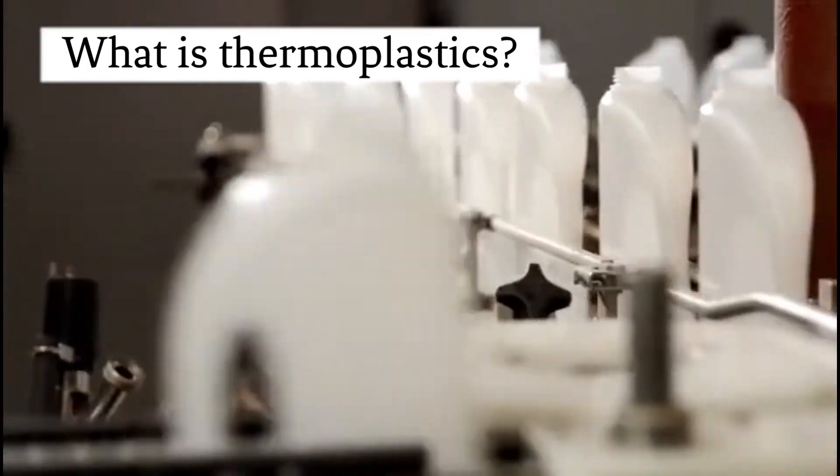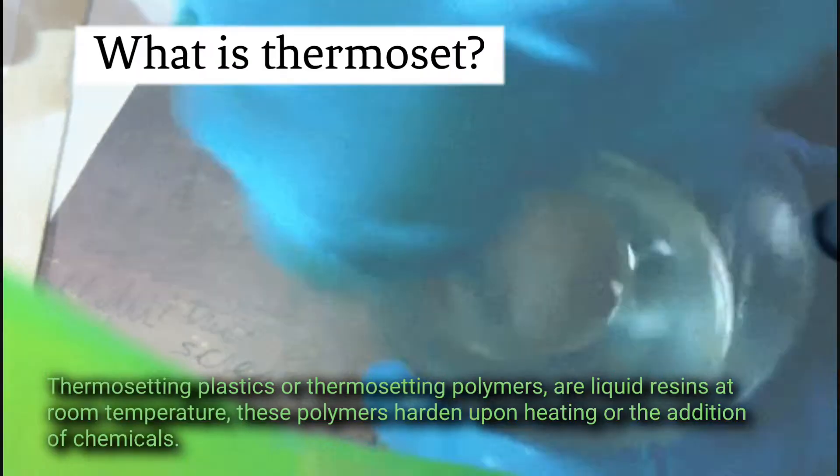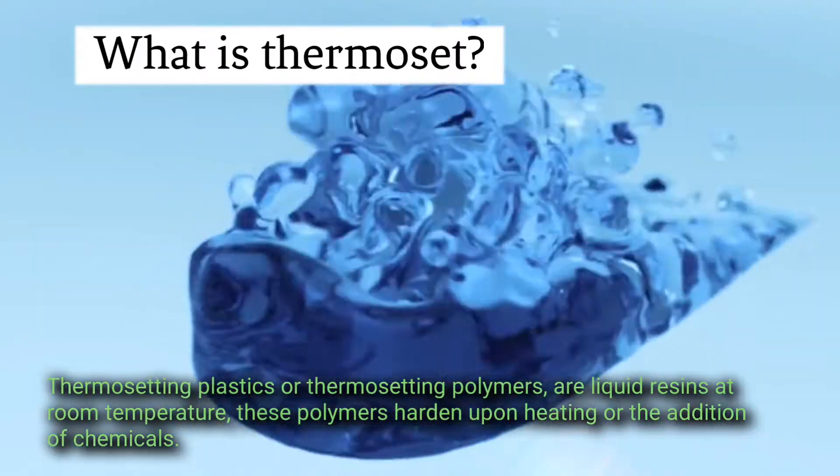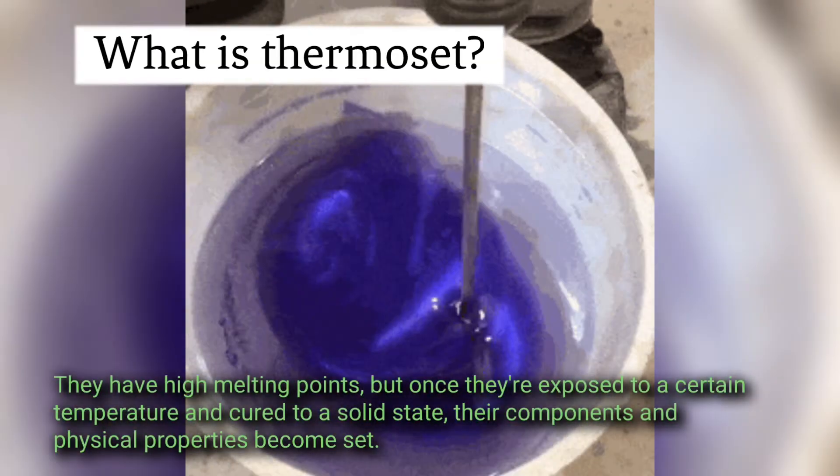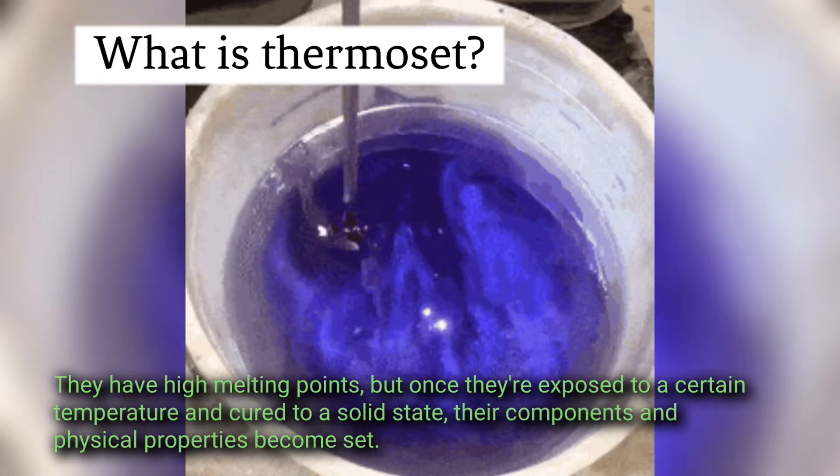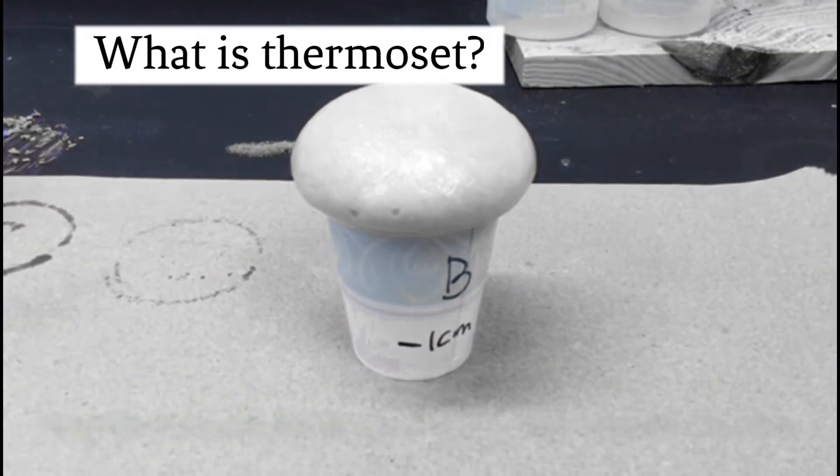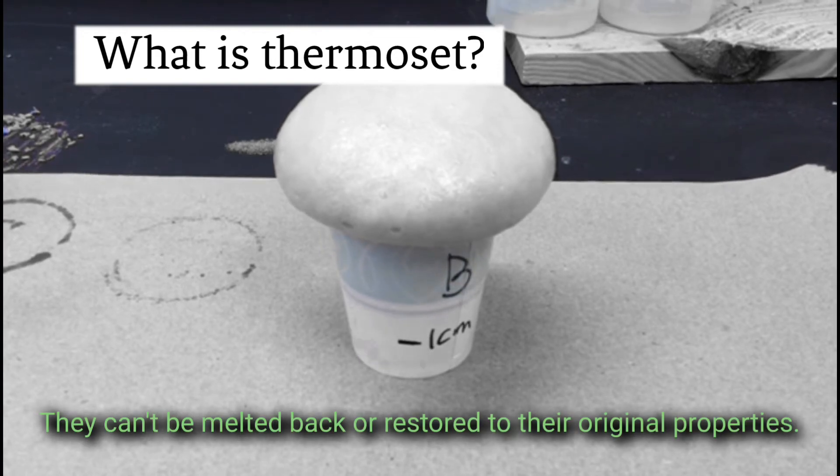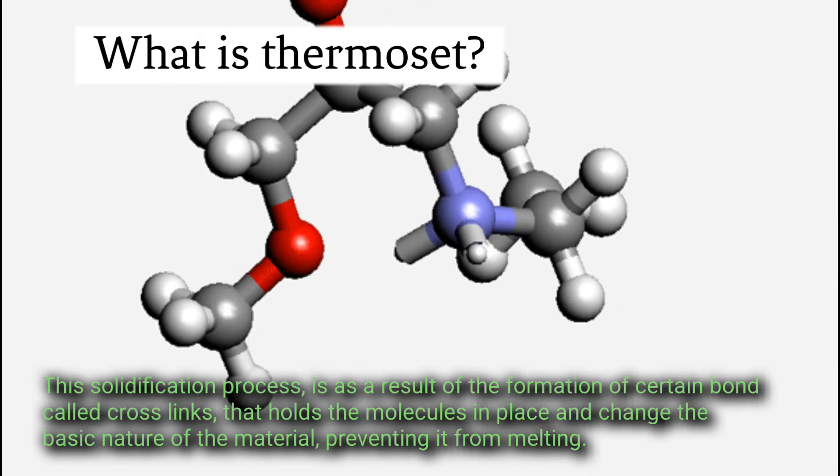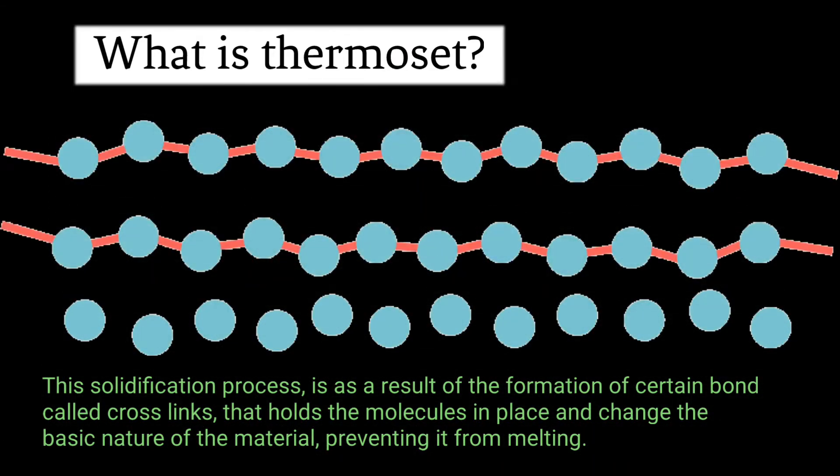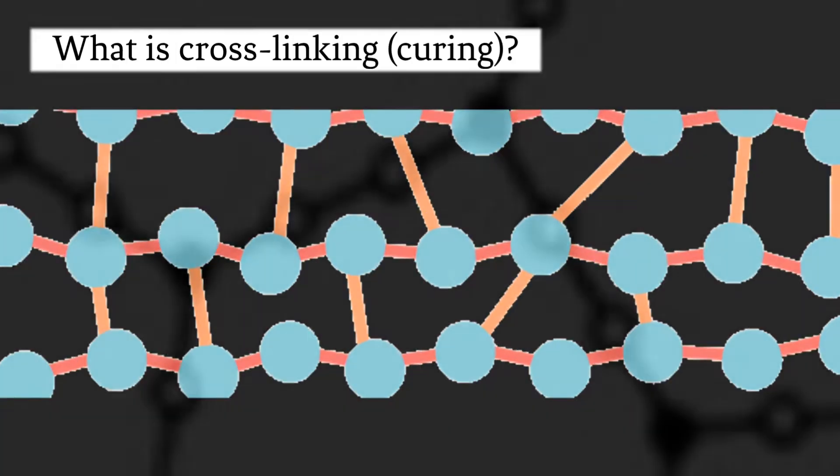What is a thermoset? Thermosetting plastics or thermosetting polymers are liquid resins at room temperature. These polymers harden upon heating or the addition of chemicals. They have high melting points, but once they are exposed to a certain temperature and cured to a solid state, their components and physical properties become set. They can't be melted back or restored to their original properties. This solidification process is a result of the formation of certain bonds called cross-links that hold the molecules in place and change the basic nature of the material, preventing it from melting.